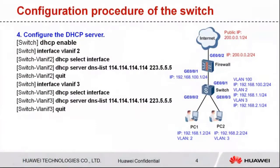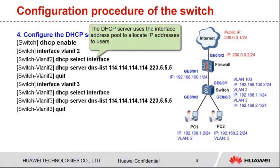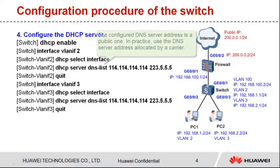Step 4: Configure the DHCP server. The DHCP server uses the interface address pool to allocate IP addresses to users. The configured DNS server address is a public one. In practice, use the DNS server address allocated by a carrier.